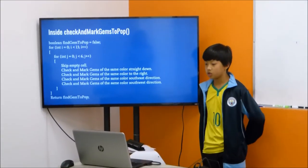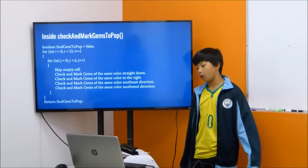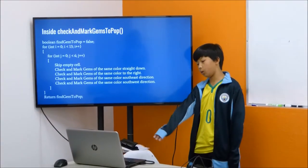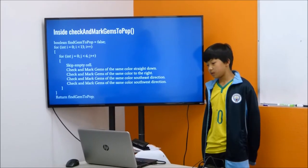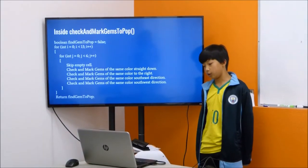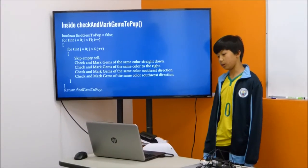The check and mark gems to pop is a for loop that goes through the whole array and marks gems that are three in a row and are the same color straight down, to the right, south east, and south west.